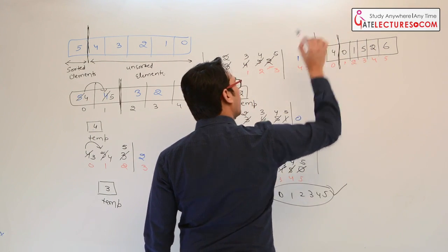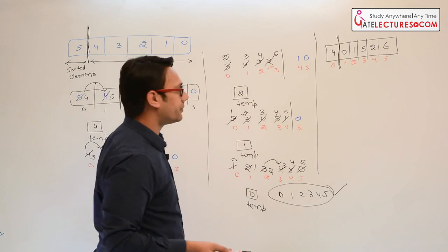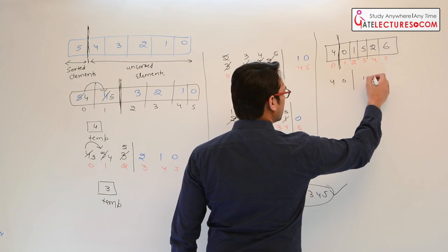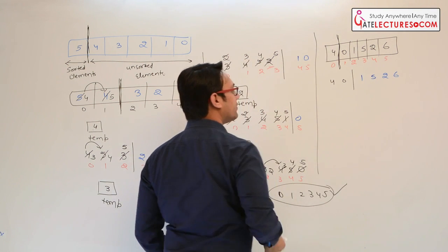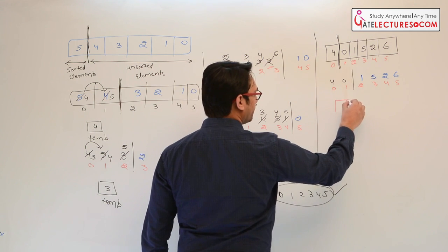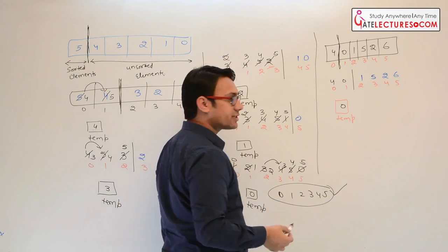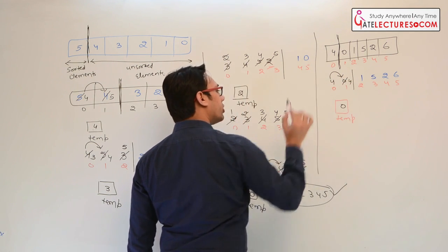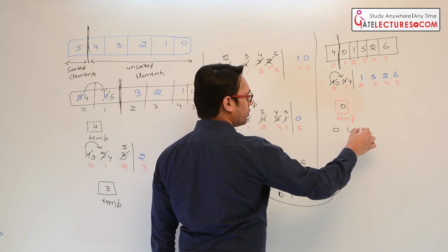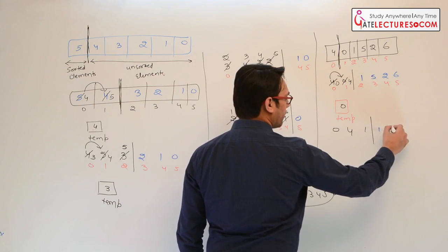Index locations are 0 to 5. Initially, one data item is already sorted. We shift the window so 4 and 0 come here, and the next elements are 1, 5, 2, and 6. Copy 0 into a temporary variable. Compare 4 and 0 — 4 is greater than 0, so shift 4 here. We cannot compare 0 with any other element, so 0 comes here.